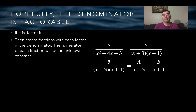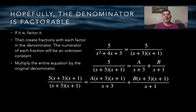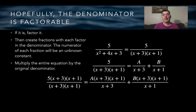So 5 over (x plus 3)(x plus 1) equals some constant A over x plus 3, plus a different constant B over x plus 1. My job now is to figure out the values of A and B. To do that, I'm going to get rid of all denominators by multiplying both sides by the original denominator in its factored form.